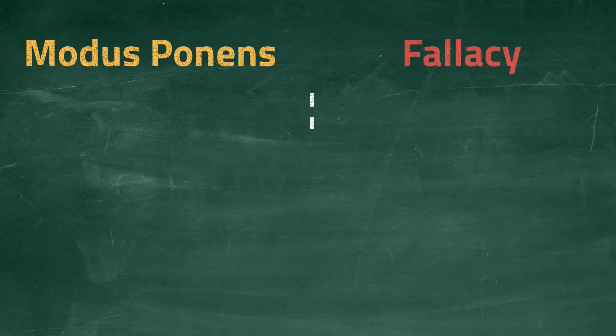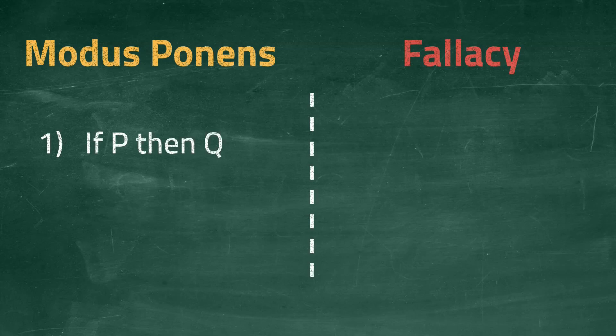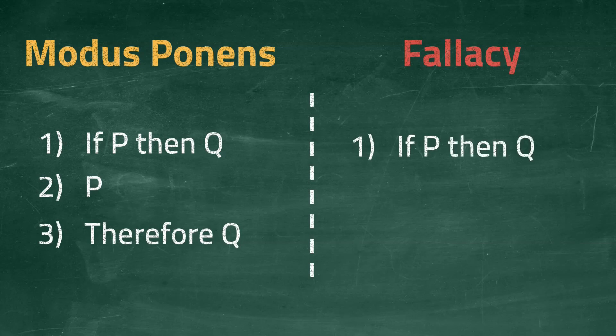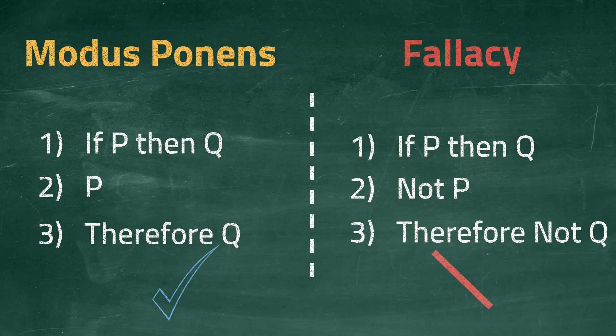I'll finish by putting modus ponens, the valid logic, next to the fallacy, denying the antecedent. You can see how similar they are, but the small difference between them is the difference between being valid and invalid.